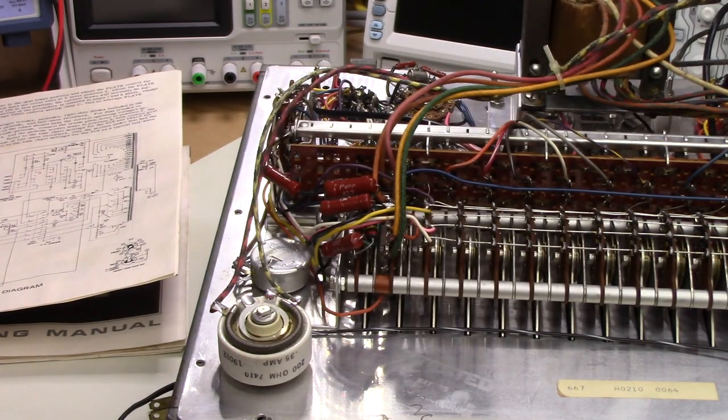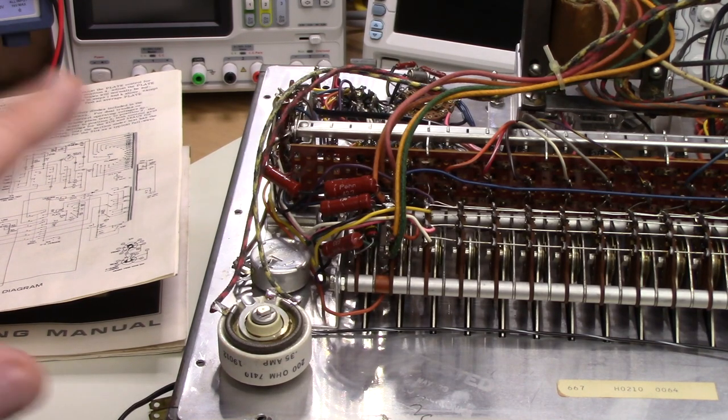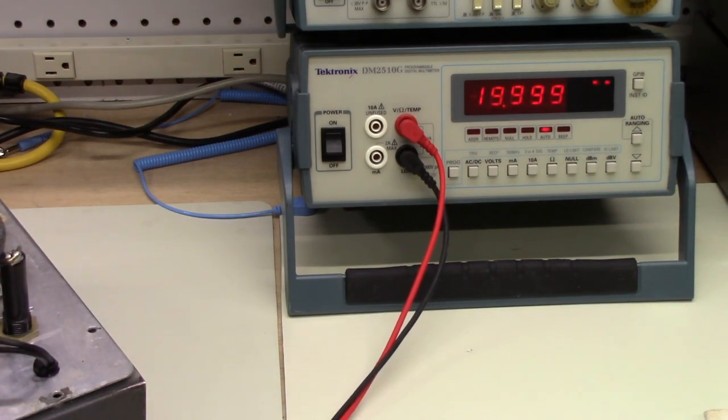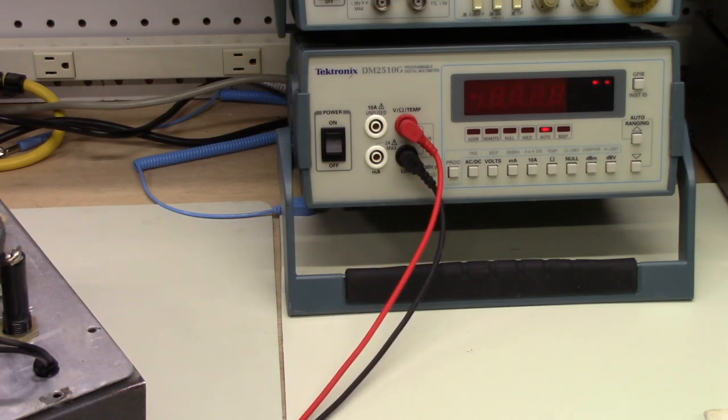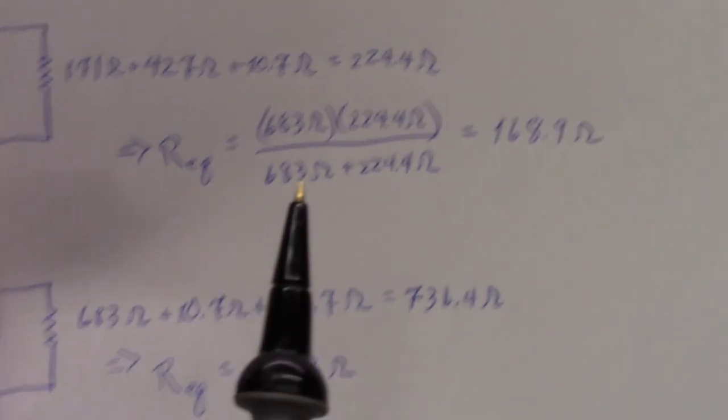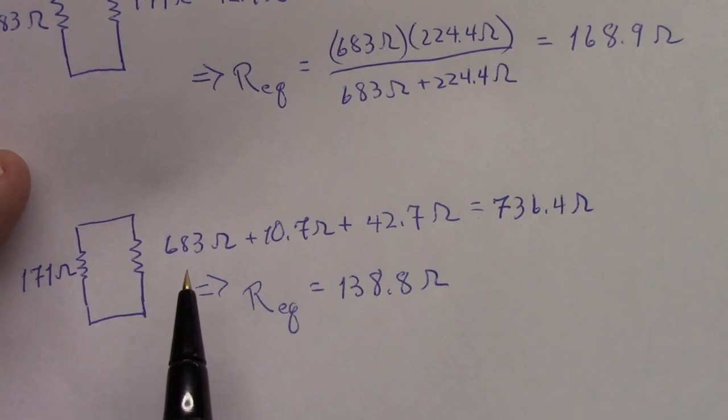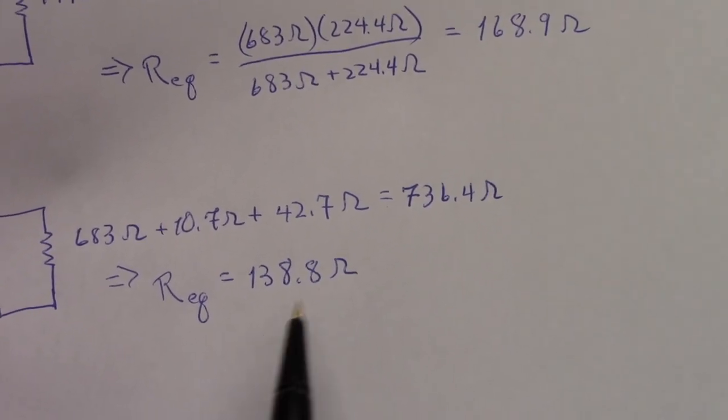This is the resistor we're going to measure across. Here's one end of the resistor, here's another. We were expecting 168.9, and what we're getting is 169.8. Outstanding. To look at the other resistor, if we want to measure across the 171 ohm resistor, the math works out and we should measure right around 139 ohms.